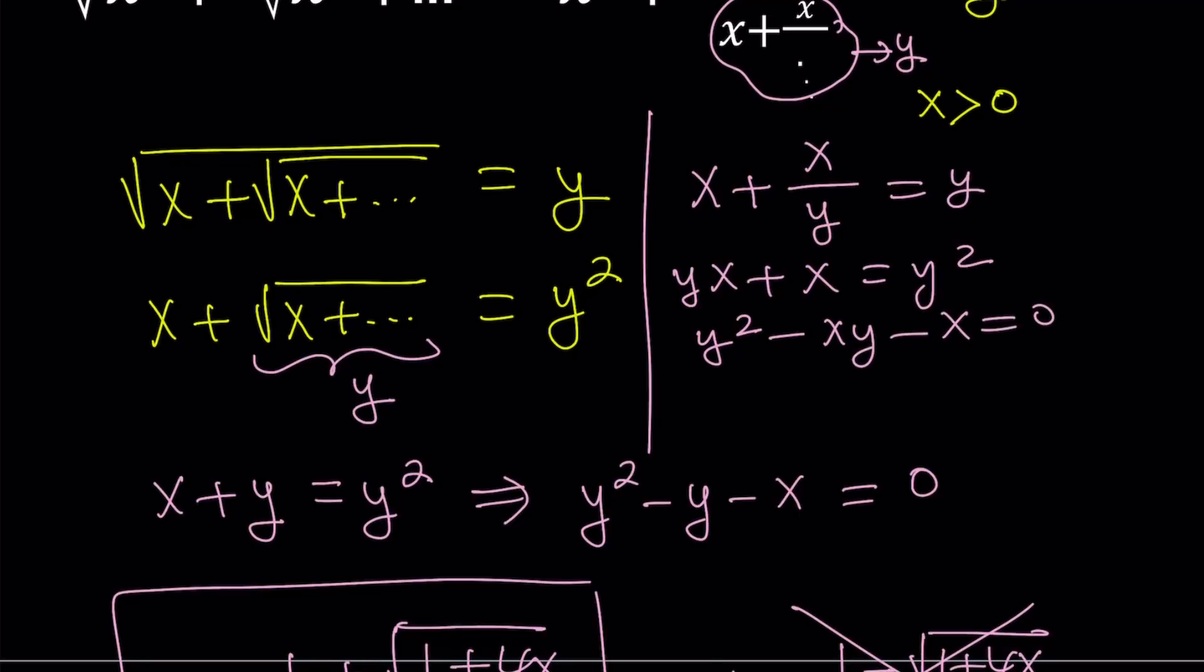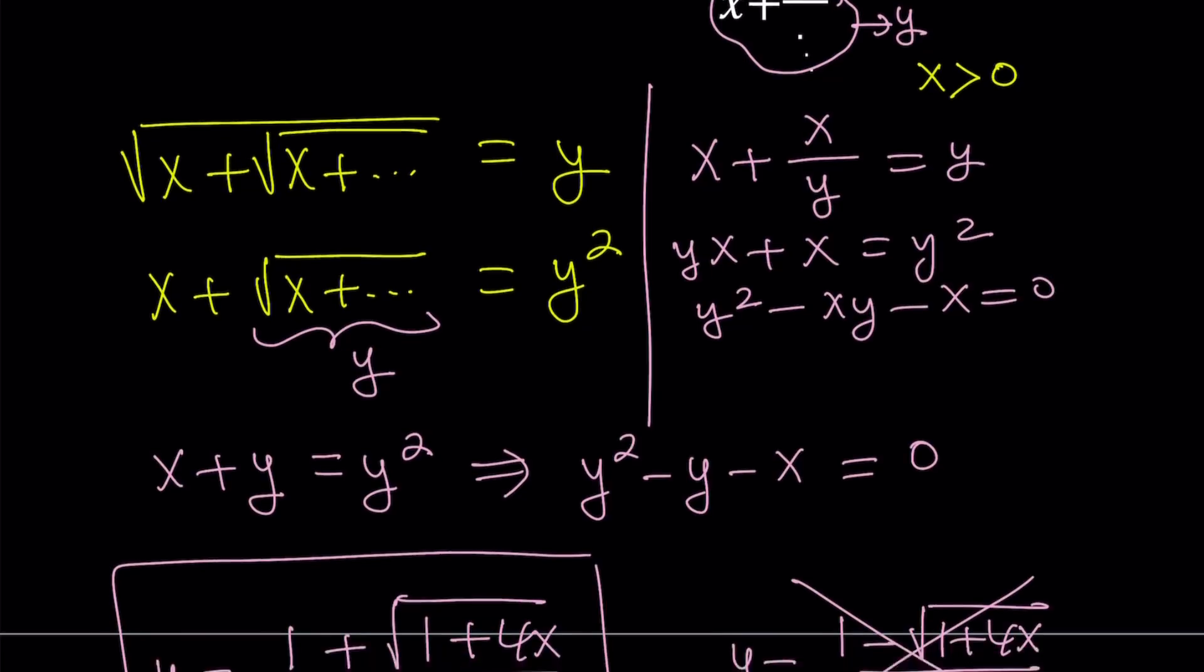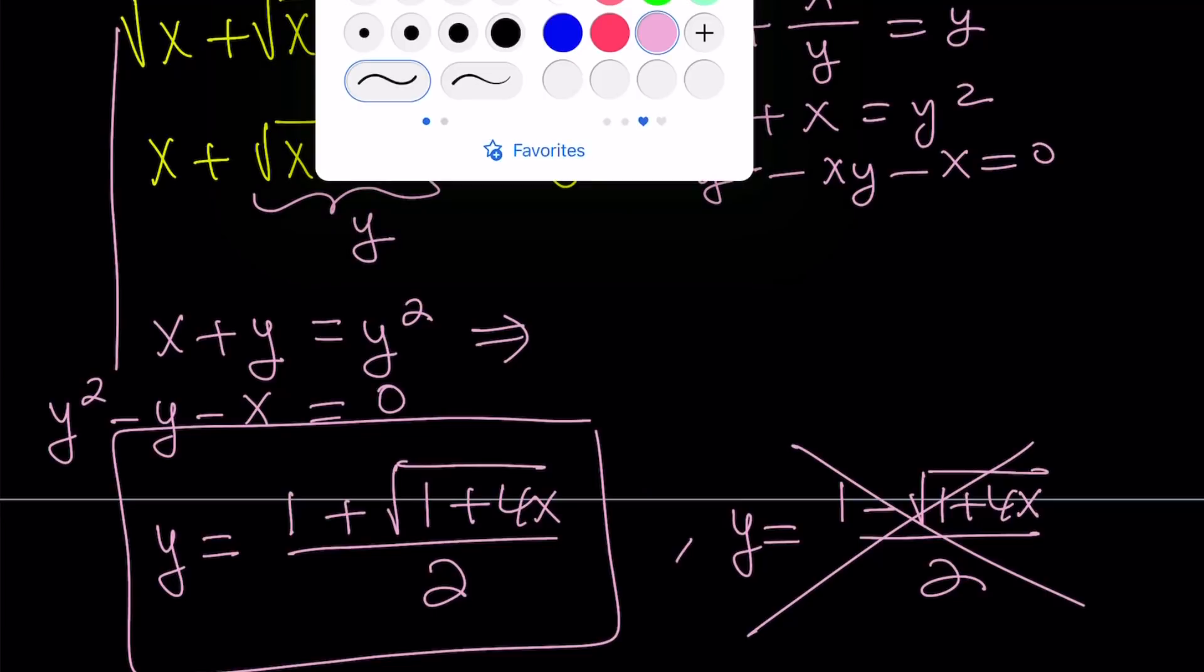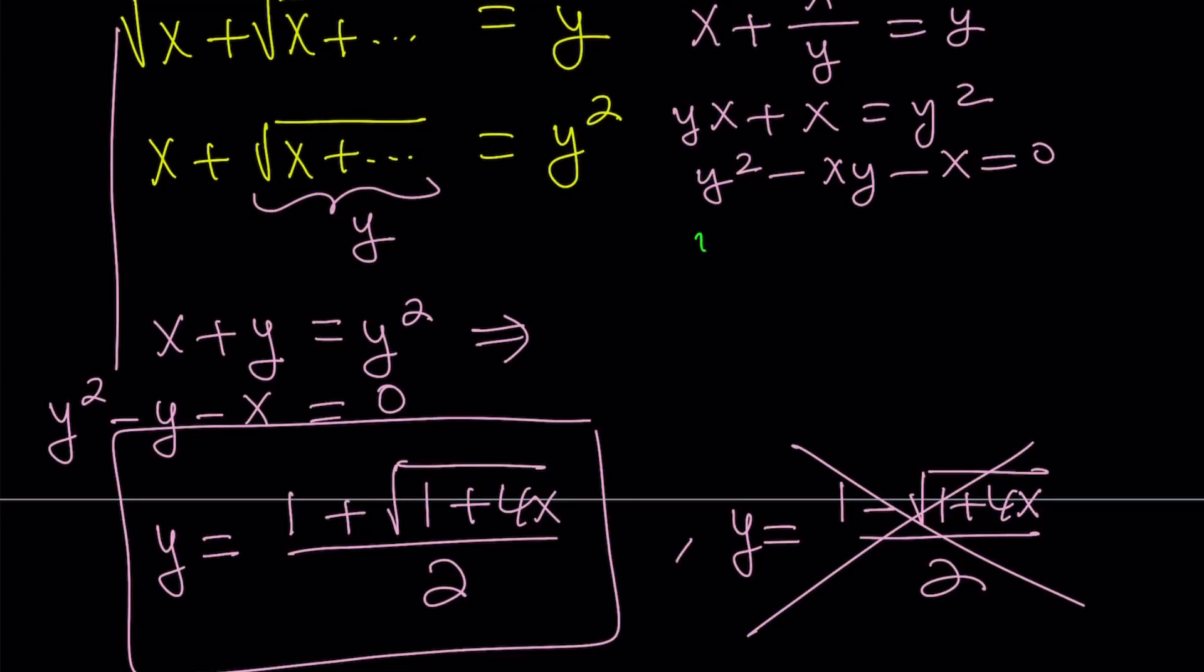And now notice that this is a quadratic equation in y. And I can solve it using the quadratic formula again. So let me go ahead and cut this. Bring it over here. And solve this equation right here. To solve this equation, I'm going to use a quadratic formula. So it's going to be y equals negative b plus square root of b squared, which is x squared, plus negative b squared minus 4ac. But that's going to turn into plus 4x. Divide by 2.